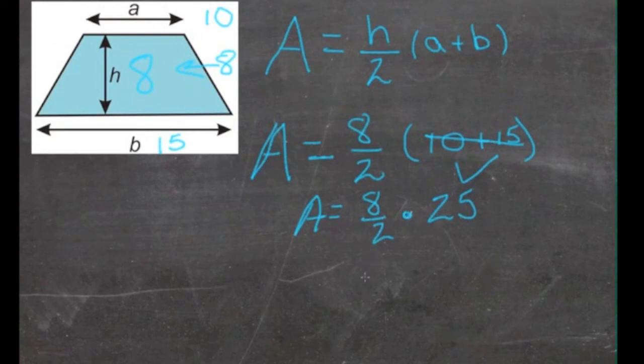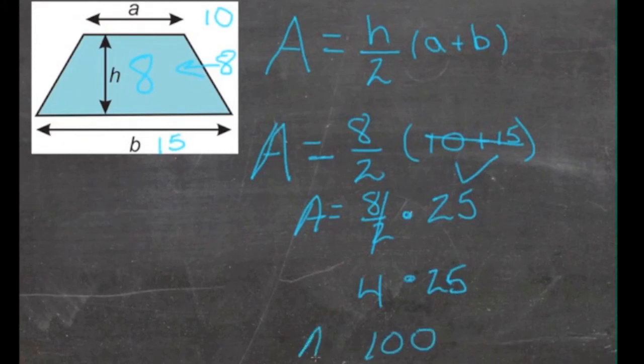8 divided by 2 is 4. 4 times 25 is 100. So the area of this particular trapezoid is 100 square units.